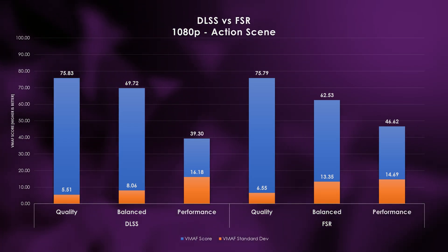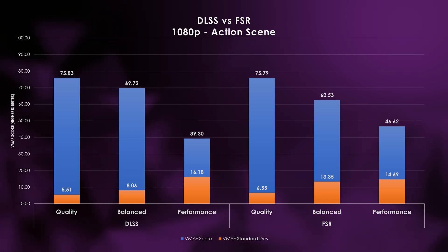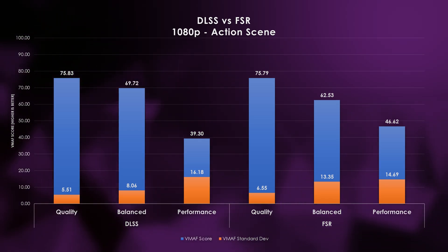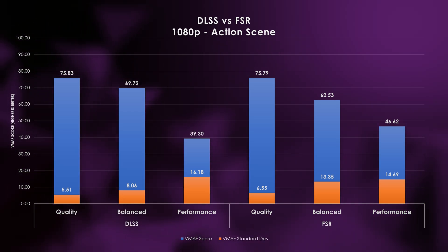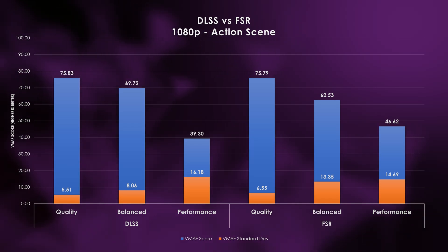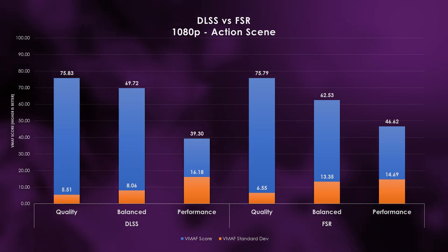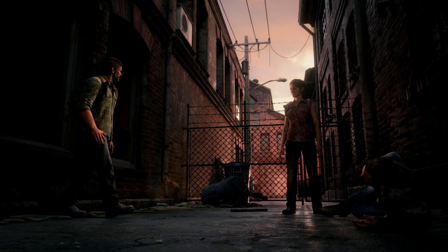DLSS performance mode is all over the place, landing just below a fair result with significant swings. FSR has a similar but slightly worse pattern. In quality mode FSR lines up well with DLSS — validating recommendations to stick to quality mode at 1080p. Balanced mode dips to a 63 VMAF score with swings into the 40s. Performance mode scores a bit better than DLSS but a score of 47 is just above fair and swings below that quite often. I've got footage and tool output to show what these numbers actually mean, captured at 120Hz to sync the segments.